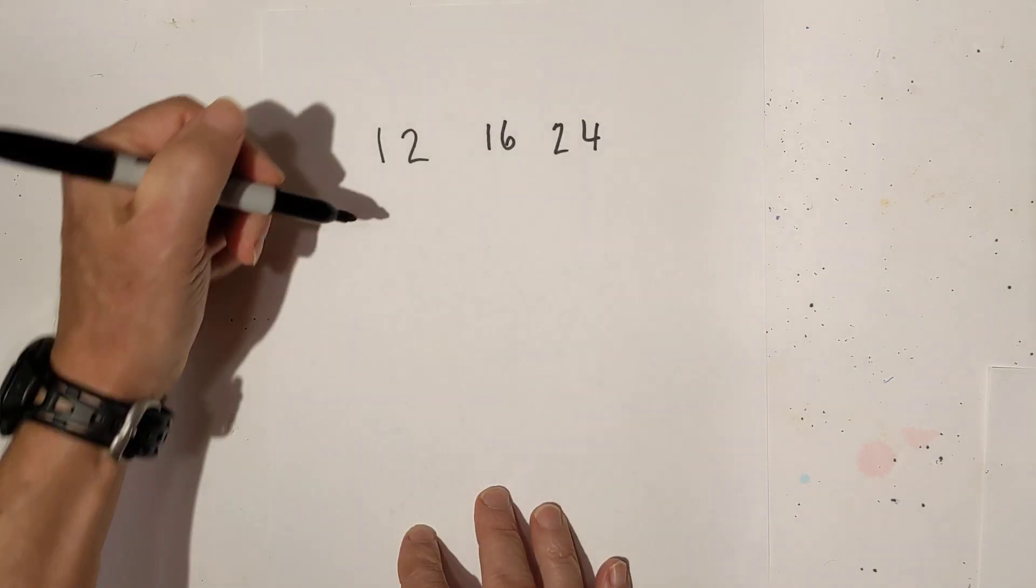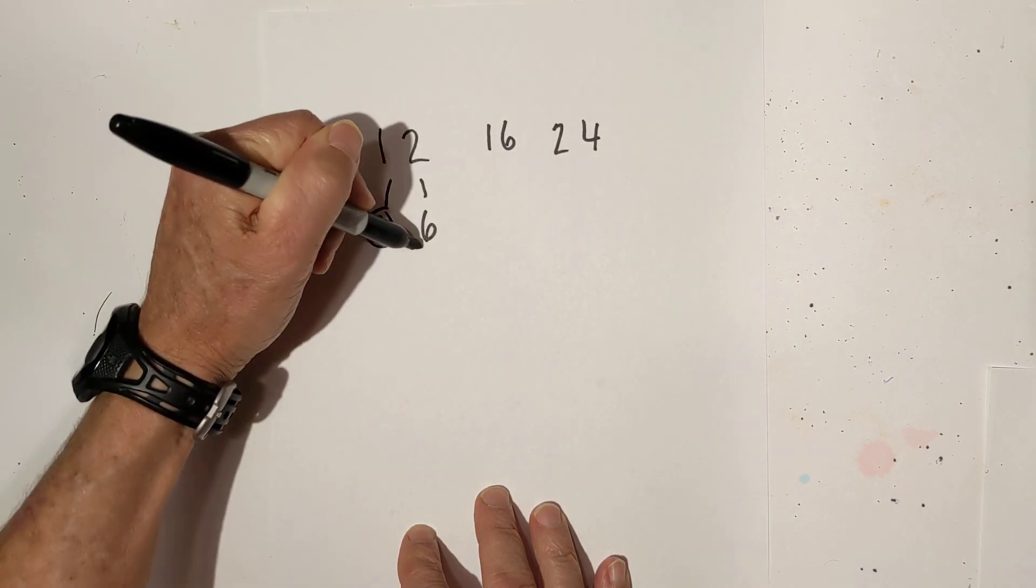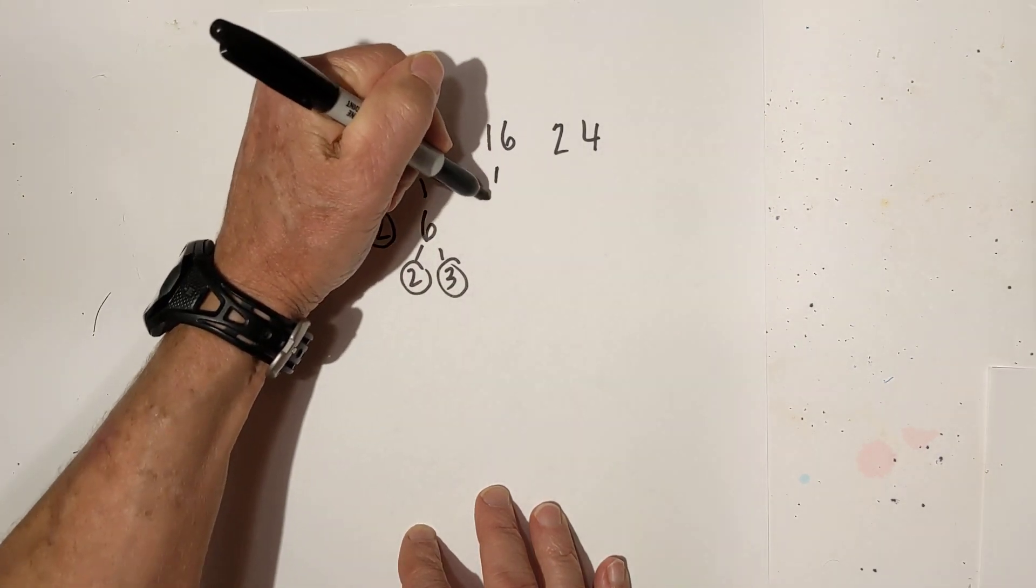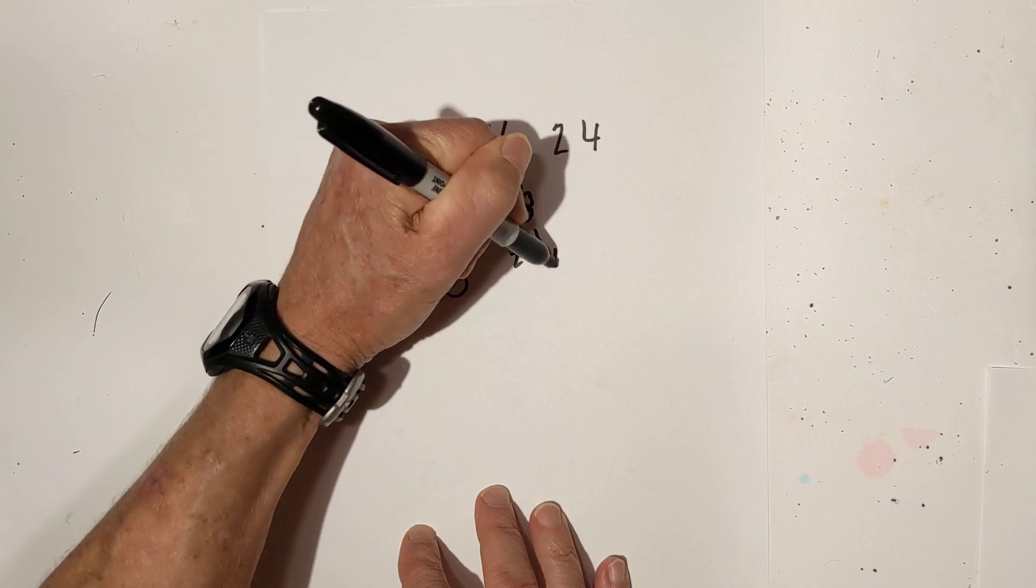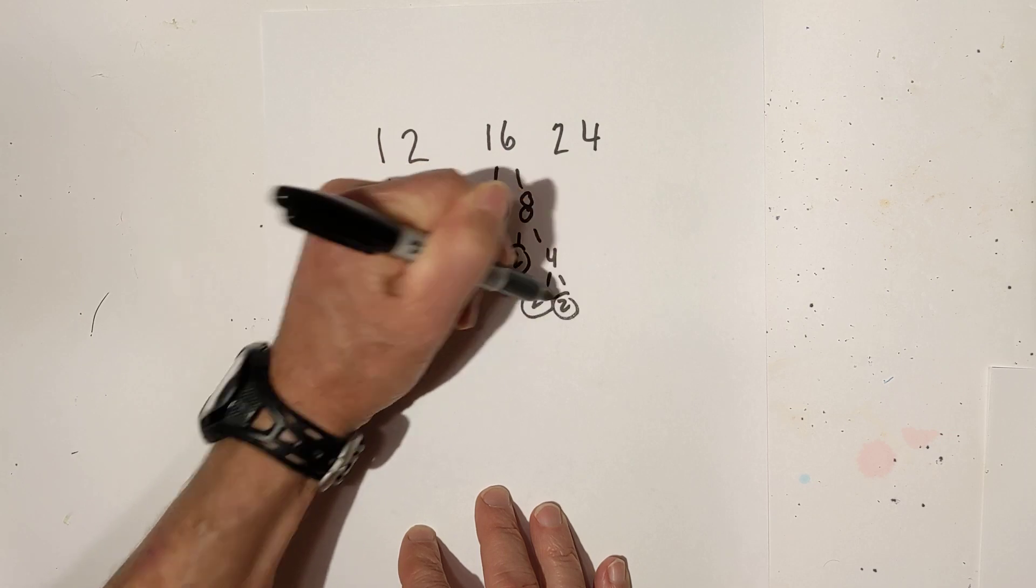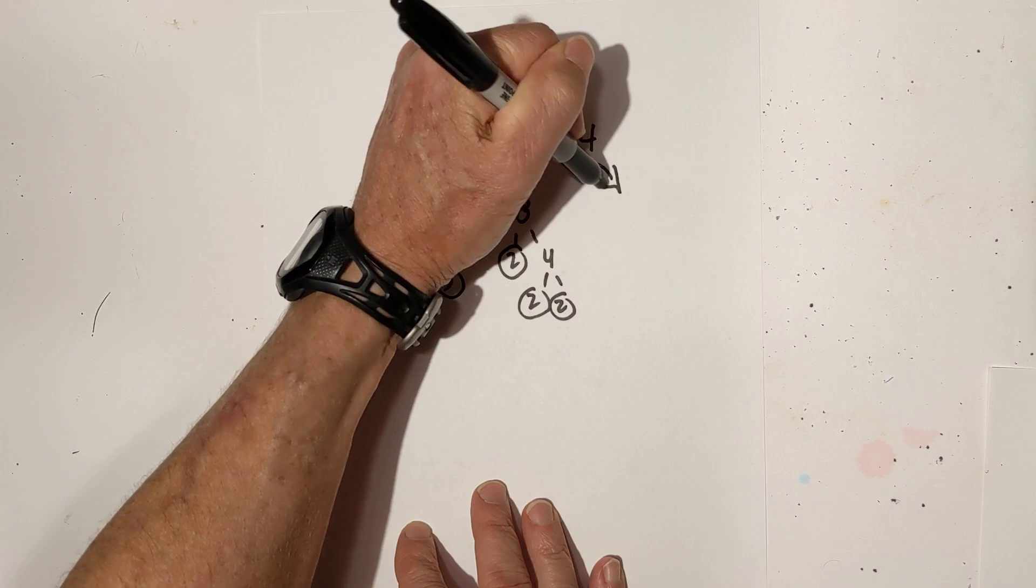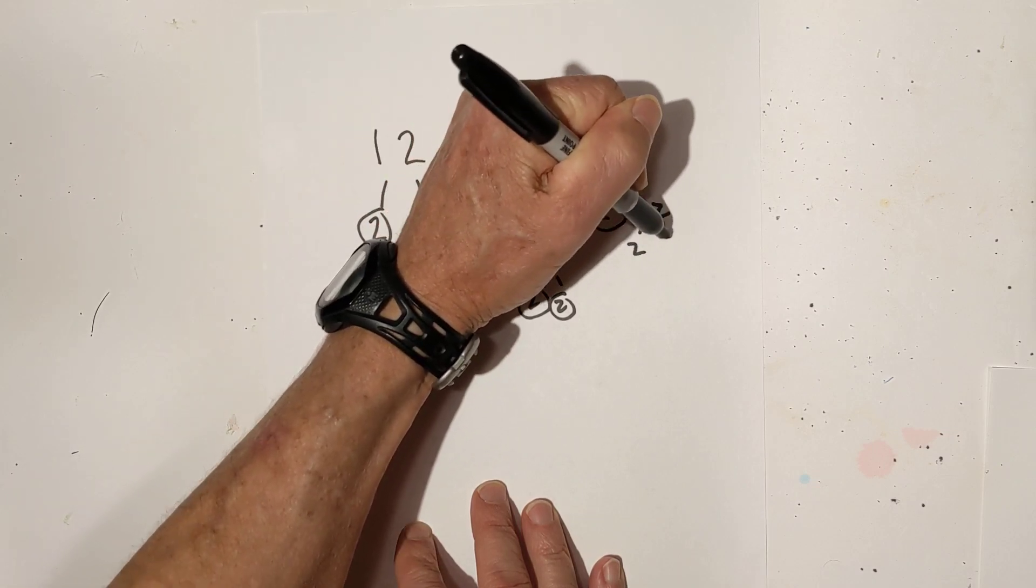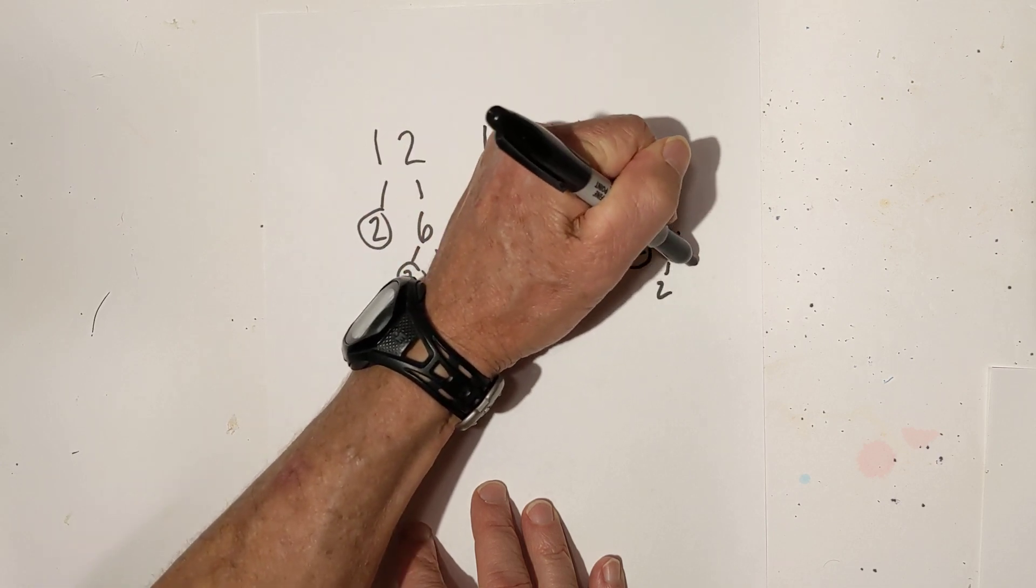Okay, so here we go, we have 2 times 6, circle the 2, 2 times 3, we are down to prime numbers there. 16 is 2 times 8, 2 times 4, and then 2 times 2 equals 4. We are down to prime numbers. And then for 24, let's draw it over here: 2, 12, 2, 6, circle the 2, and then 2, 3.